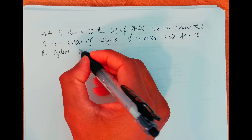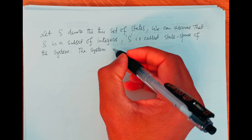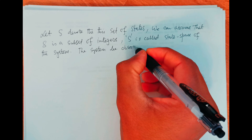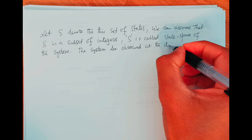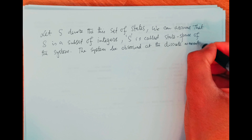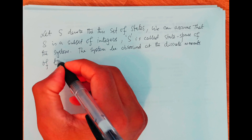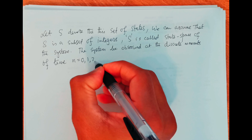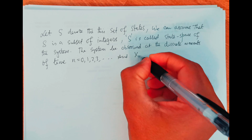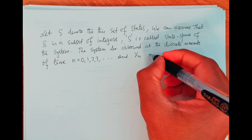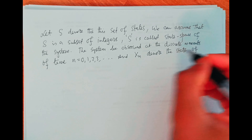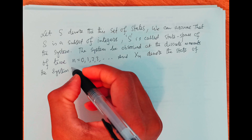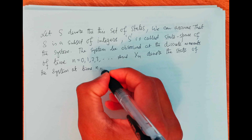In this series of lectures we will assume that the system is observed at discrete moments of time: n = 0, 1, 2, 3, and so on. Let X(n) denote the state of the system at time n.